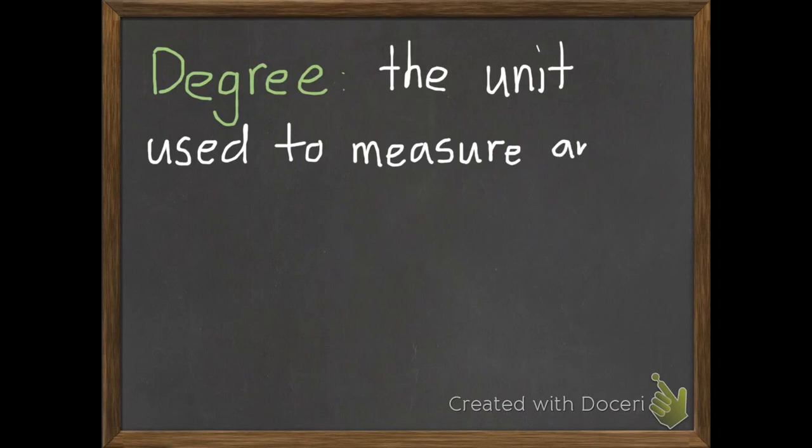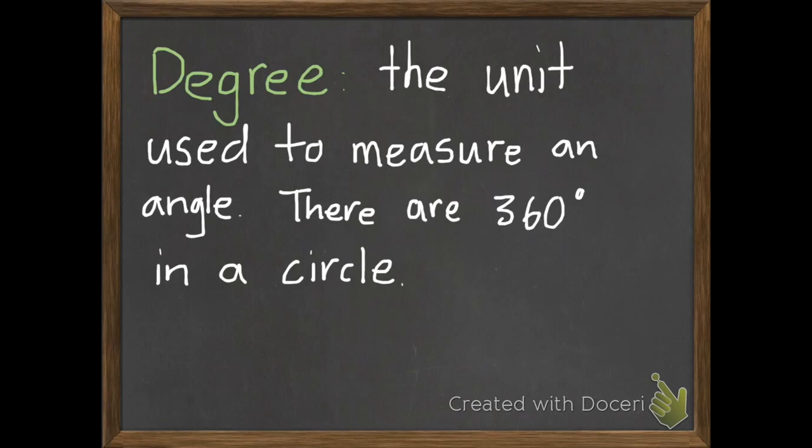Degree is the unit used to measure an angle. There are 360 degrees in a circle. So yesterday's lesson we divided our circle into four parts. With degrees, it actually divides our circle into 360 parts.